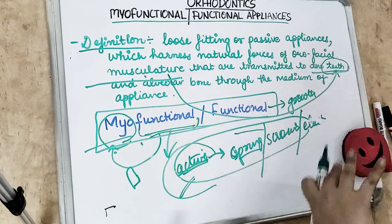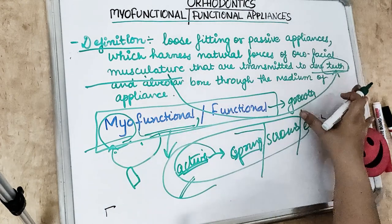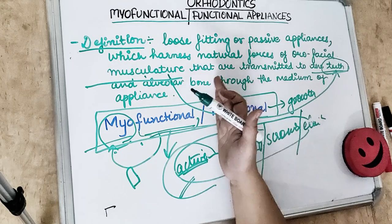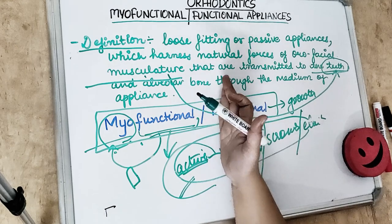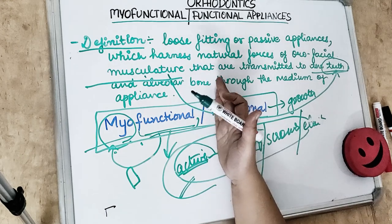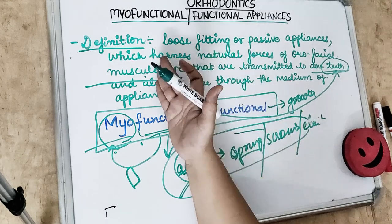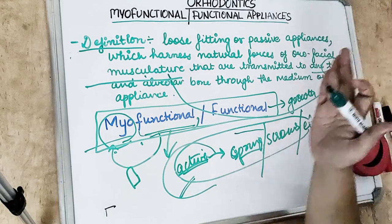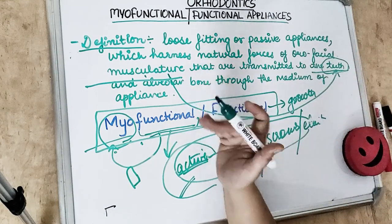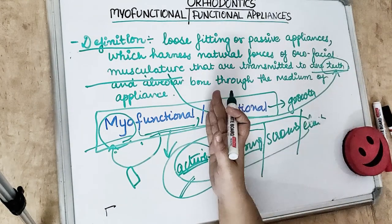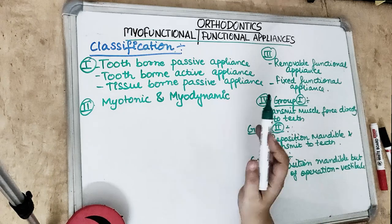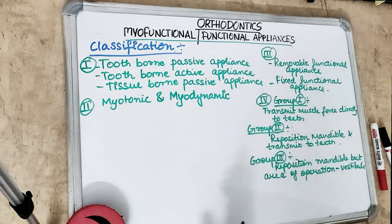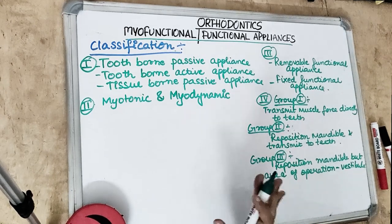The appliance takes forces from the muscle and transmits them through the medium of the appliance to the teeth, to the mandible, or to the alveolar bone — not to a single tooth, but to the whole dentition. The functional or myofunctional appliances can be classified in a number of ways.